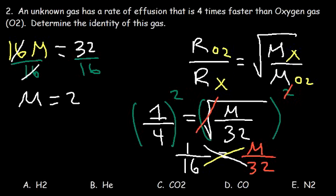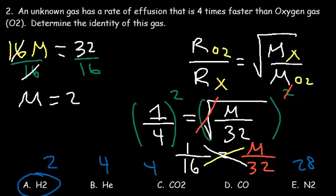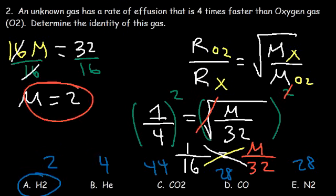Therefore the answer has to be hydrogen gas, H2, which has a molar mass of 2. Helium has a molar mass of 4, nitrogen gas is 28, CO2 is 44, and CO is 28. Only hydrogen has the molar mass of 2 that we just calculated. That's how you can determine the identity of the gas in a multiple choice problem.